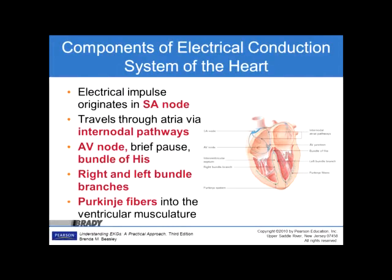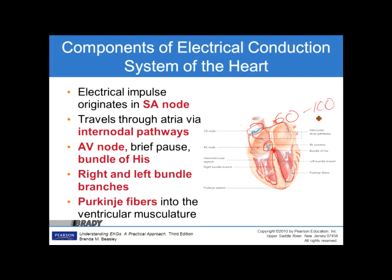The electrical impulse originates in the sinoatrial node, travels through the internodal pathways to the AV node where there is a brief pause, then moves to the bundle of His, the right and left bundle branches, and finally the Purkinje fibers, which deliver the electrical stimulus into the muscle tissue itself. Each site has an intrinsic rate: 60 to 100 beats per minute for the SA node, 40 to 60 for the AV node, and 20 to 40 for the ventricular muscle.